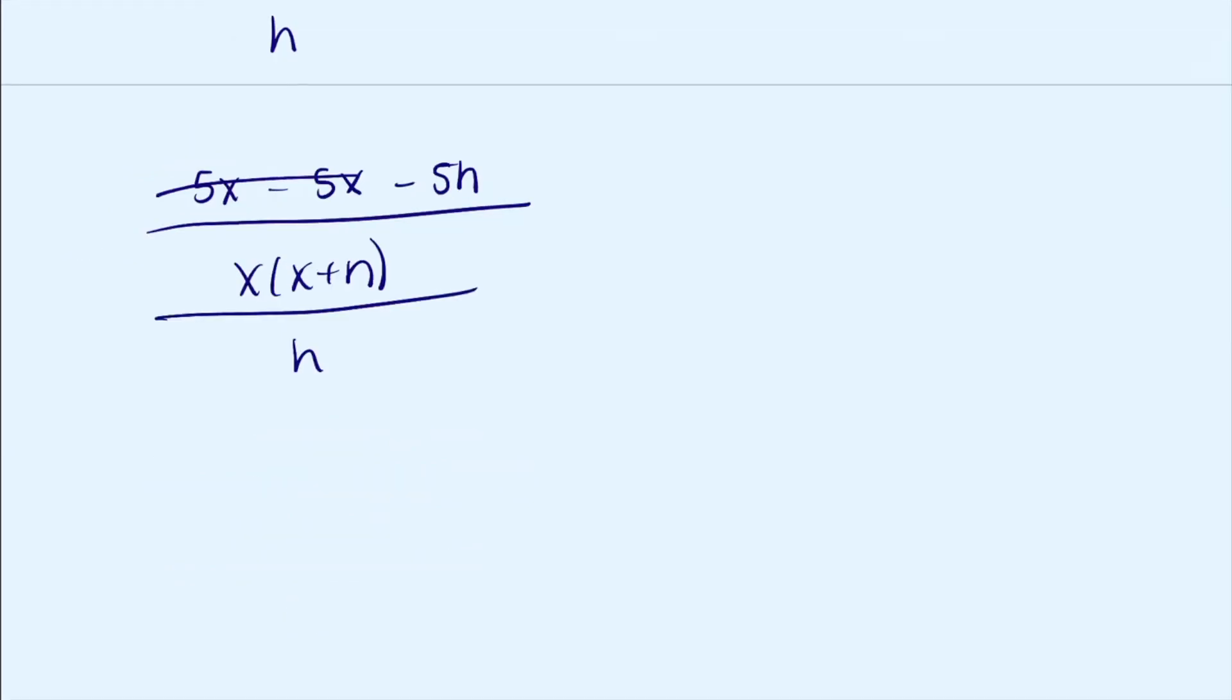So we're left with negative 5h over x times x plus h, all over h. Then when we divide a fraction by a fraction, it's the same as multiplying by the reciprocal.